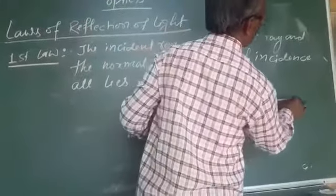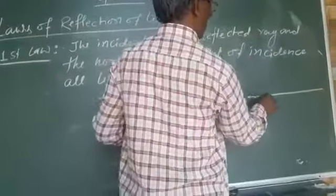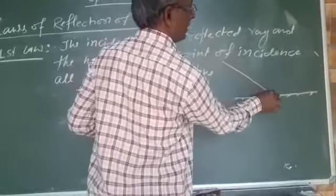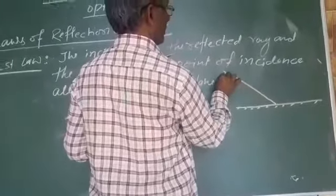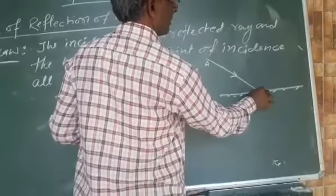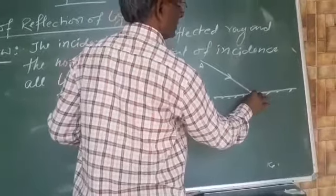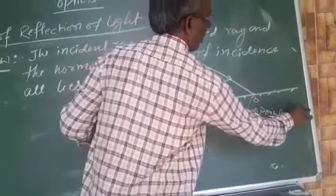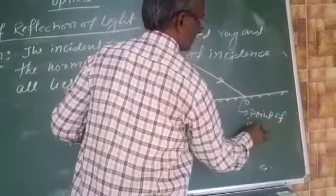This means that this is a plane. And a ray incident on this surface, this is the point of incidence. Point of incidence.